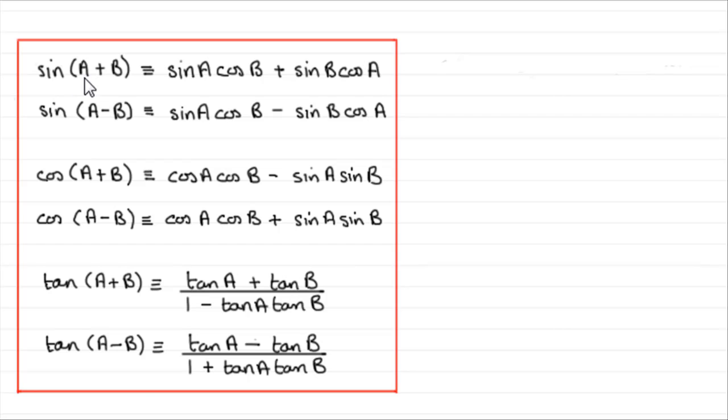You'll notice the sine of A plus B is identical to sine A cos B plus sine B cos A. But when it comes down to the sine of A minus B, we've got the same pattern as up here, only the sign changes. We use the same sign here as we have here.